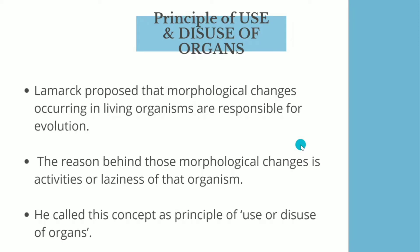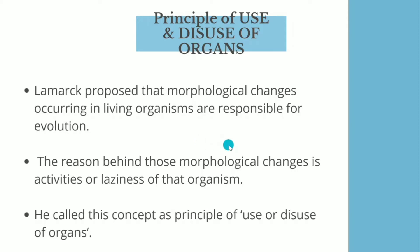For example, consider humans. We do not have a tail, but we do possess a tailbone. Why don't we have a tail? Because since several generations, we have stopped the usage of the tail, and that is why that organ has been degenerated after many generations. This is how he explains that morphological changes occur because of the activities or laziness of that organ — this is the concept of use or disuse of organs.